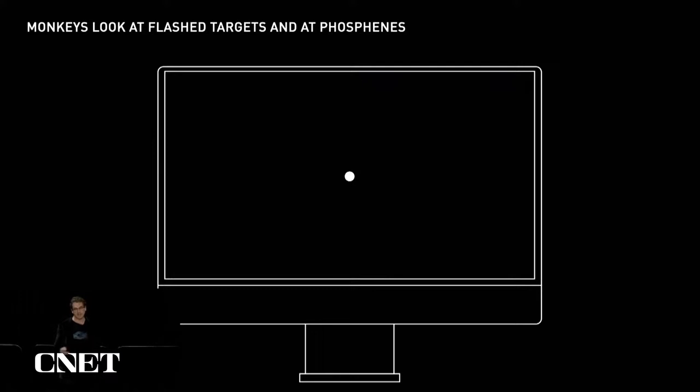We start by training the monkey to fixate a central point on the screen, like this white dot. And we start by presenting real visual stimuli on the screen, and rewarding the monkey for making eye movements toward those stimuli.